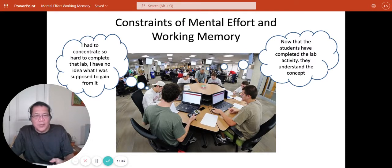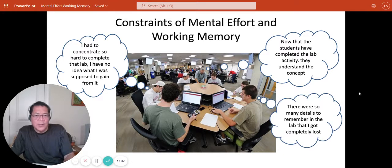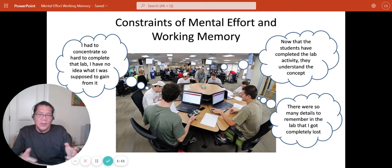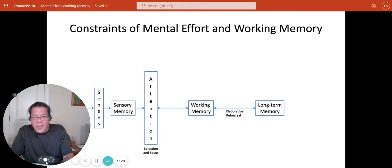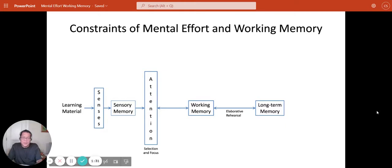A second student may be having trouble with the capacity limits of working memory. That student is thinking, there are so many details to remember that I got completely lost. There were too many details for that student to keep in working memory, and therefore they got overwhelmed and didn't really take anything away from the lab activity. These are examples of the constraints of mental effort and working memory.